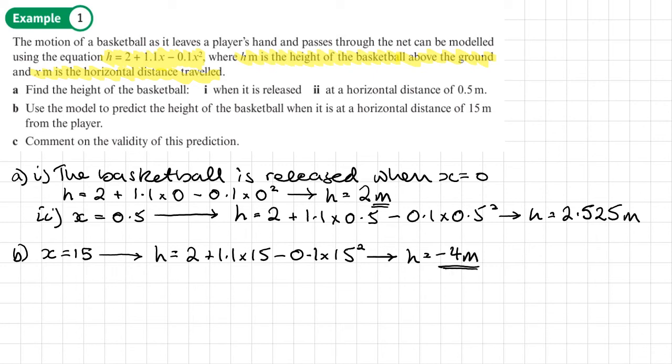That's not incorrect, but maybe that tells us something about our model. Part C: comment on the validity of this prediction. Well, obviously we can't have a negative height. That would mean it would be below the ground. So that means that this model isn't suitable for a horizontal distance of 15 meters.